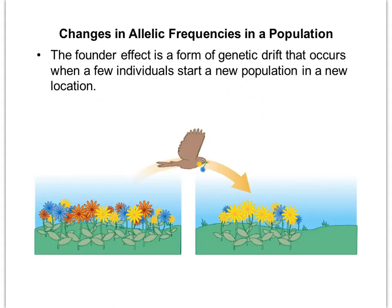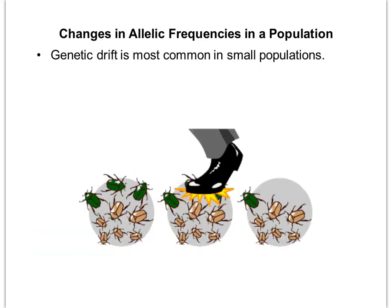The other type of genetic drift is the founder effect — whenever just a few individuals from a population start a new population in a new location. In the example shown, the resulting population looks very different from the starting population; in fact, there is no more red in the new population because it wasn't carried over by the bird. Genetic drift is more common in small populations because it's more likely to change allele frequencies when the population is smaller.